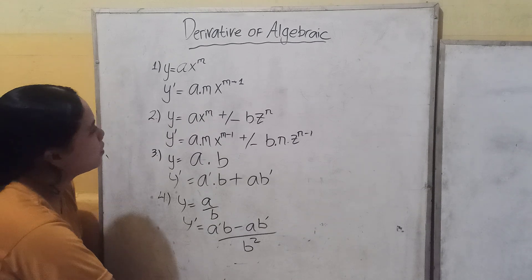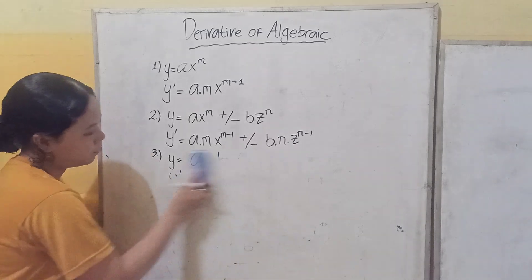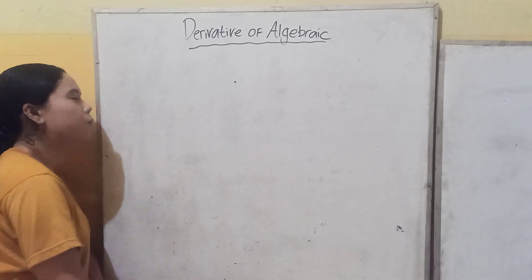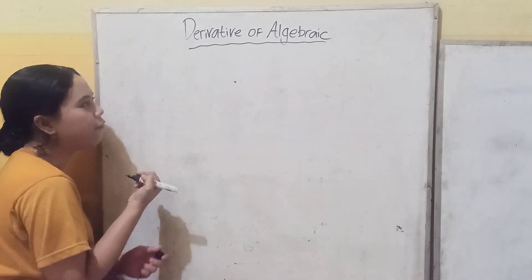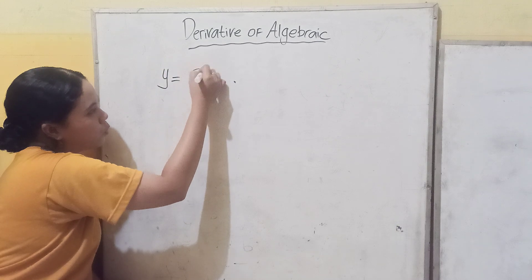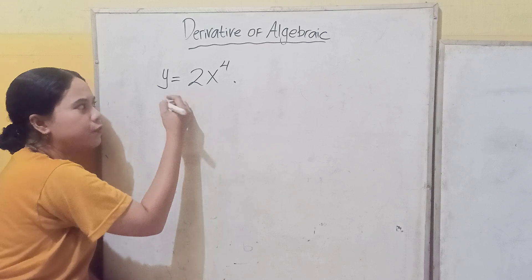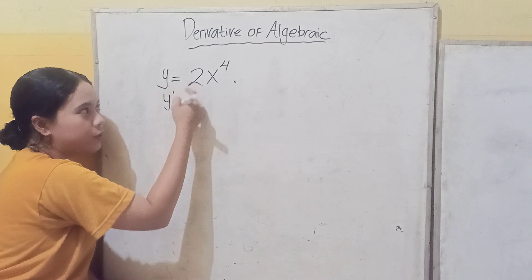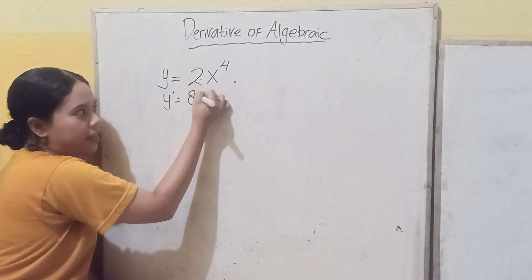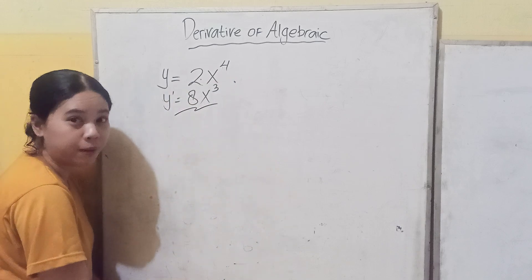Now I will give you some examples. For the first example, let's say y equals 2x to the power of 4. To find y', we do 4 times 2, which is 8, then x to the power of 4 minus 1, which is 3. So y' equals 8x^3. Very simple!